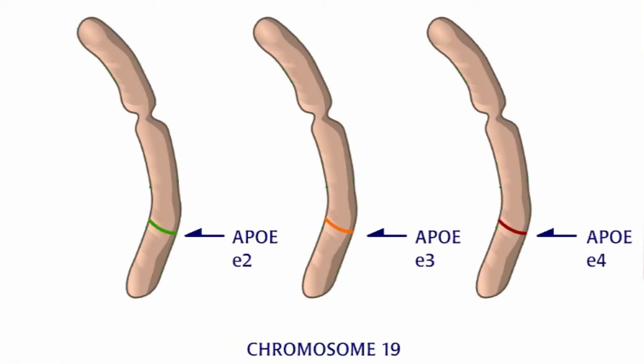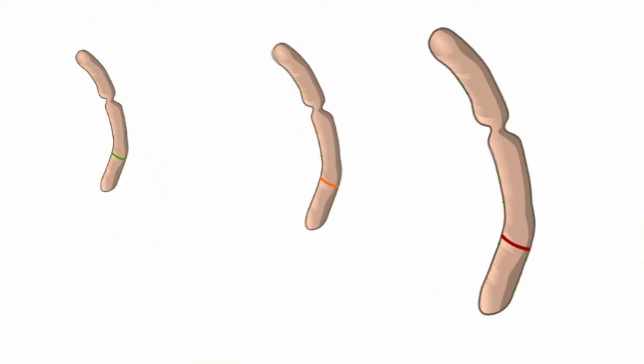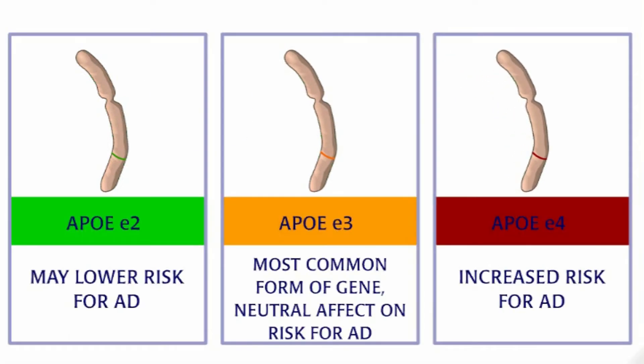The APOE gene has three main alleles: E2, E3, and E4. People with the E4 allele of APOE are more likely to develop AD, but not everyone with E4 will develop AD.